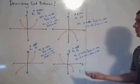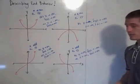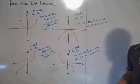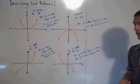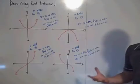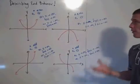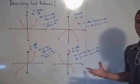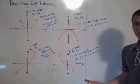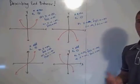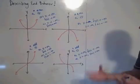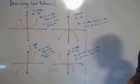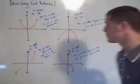So these four things you just have to commit to memory, and then you'll be able to describe the end behavior of any polynomial function. That's very helpful when you're trying to graph polynomial functions by hand, because graphing polynomial functions by hand isn't quite as easy as graphing a linear or quadratic function. You have to know more about what's going on in the graph, so the end behavior is definitely one of those things. Let's look at a couple of examples.